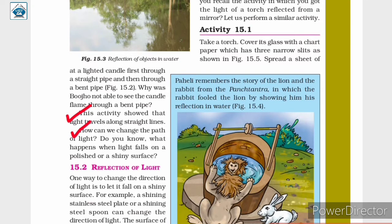How can we change the path of light? Do you know what happens when light falls on a polished or a shiny surface? Just as we saw in the previous activity, light travels along straight lines. Here we are asked how we can change the path of light.